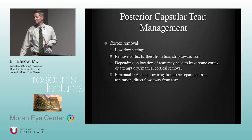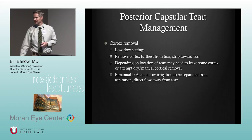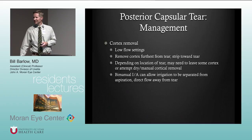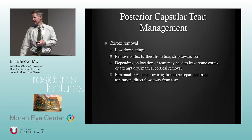If we leave a lot of cortex, you're going to get a big Soemmering's ring because the cortical material will proliferate lens epithelial cells. In most cases you won't need surgery for that. In some cases, it may be wise to do a YAG early — within a few months — so you can get through that material. If it's really thick, you may have to do surgery to remove that very thick PCO.